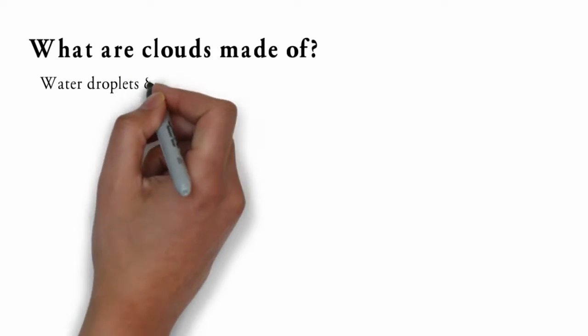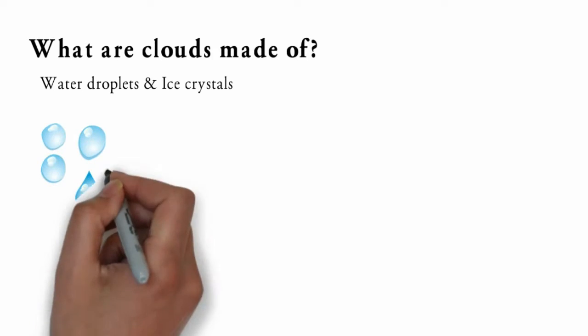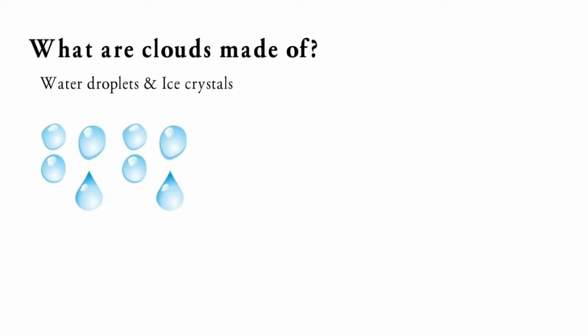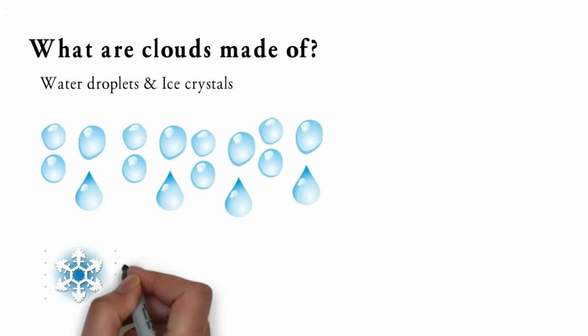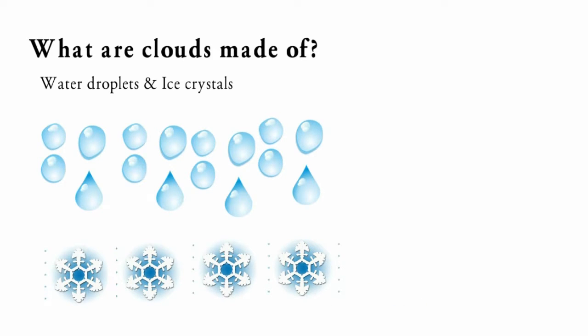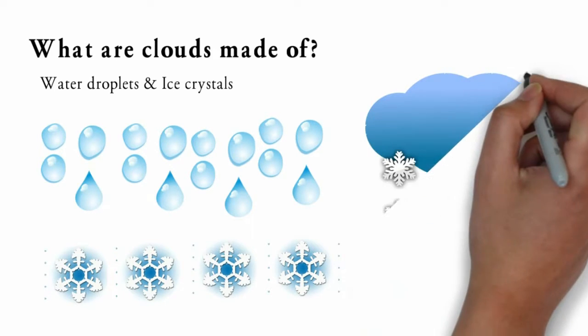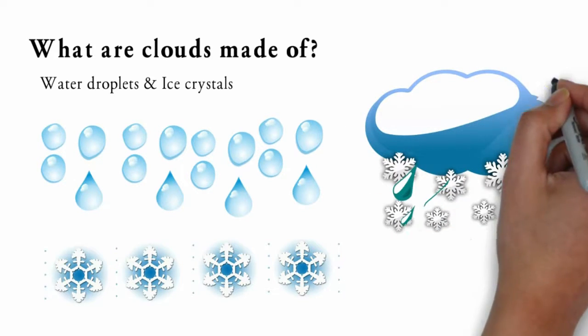Clouds are made of water droplets and ice crystals. When warm air containing water vapor rises, it cools down. Cool air cannot contain as much water vapor as warm air. Therefore, some water vapor condenses onto dust particles floating in the air, forming a tiny droplet around each dust particle. When large numbers of these droplets come together in billions, they form clouds.